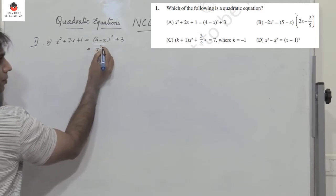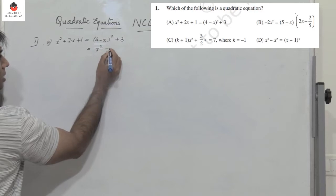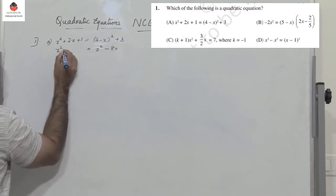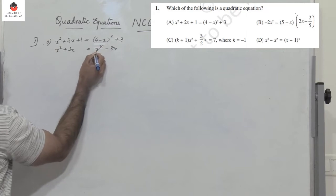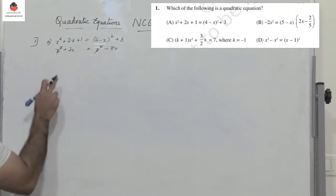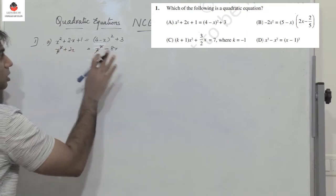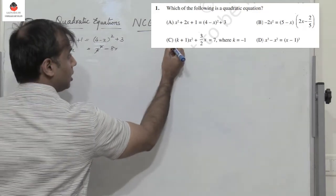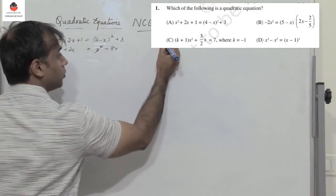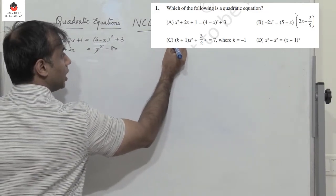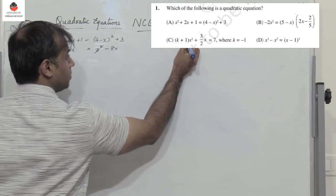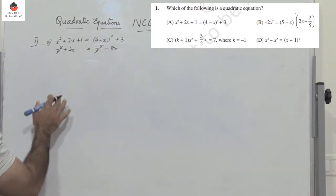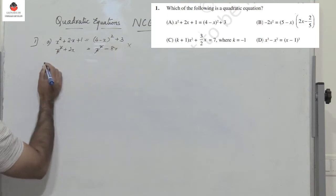Here I have x squared plus 2x, so x squared and x squared get cancelled. This is not a quadratic equation. For a quadratic equation, it has to be of the form ax squared plus bx plus c. Without the x squared term, this is not a quadratic equation.